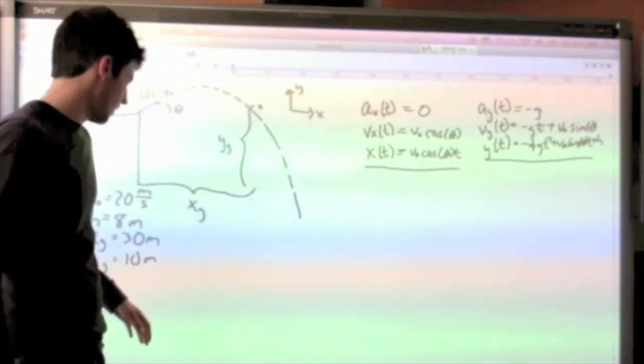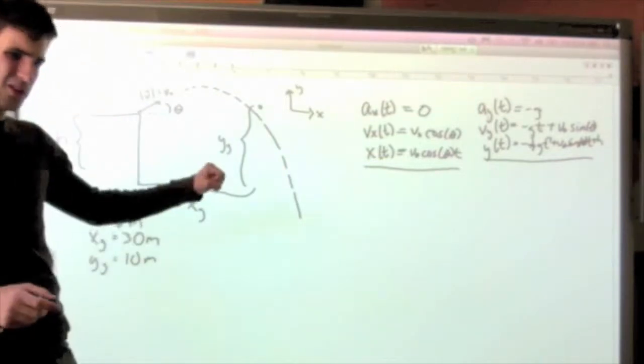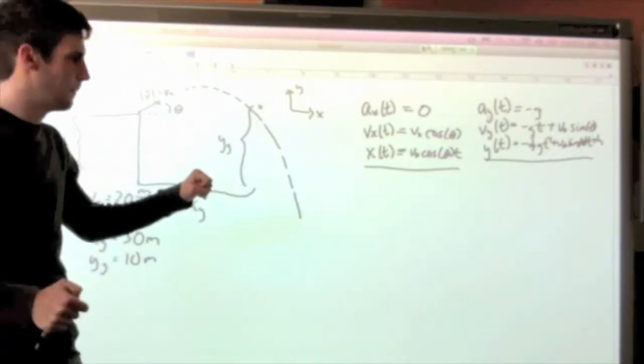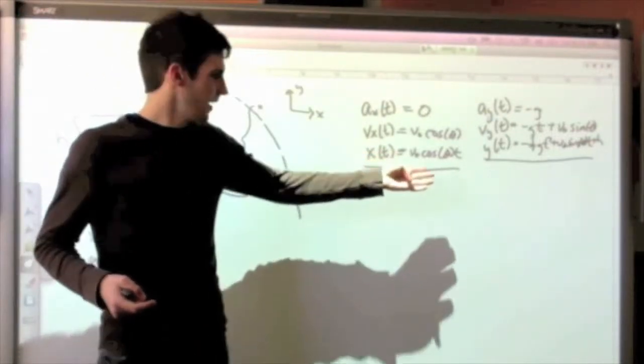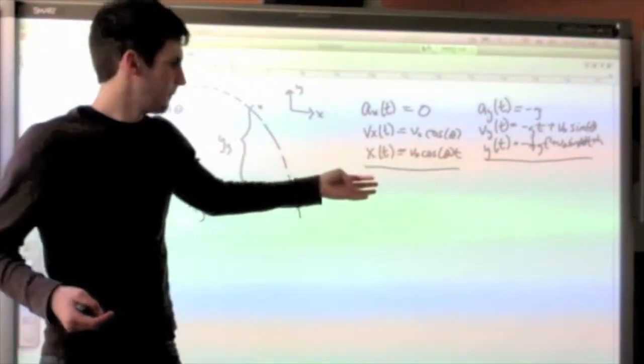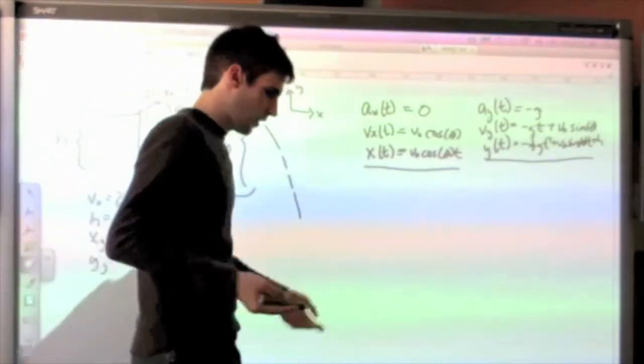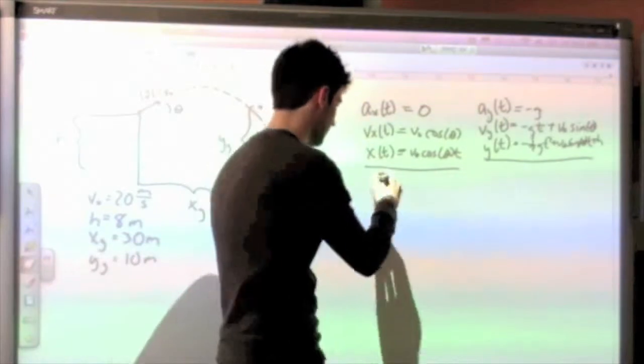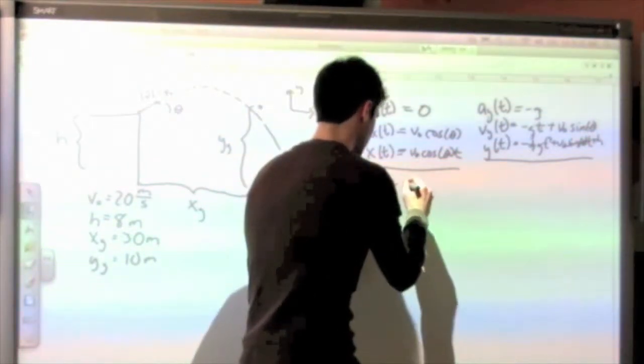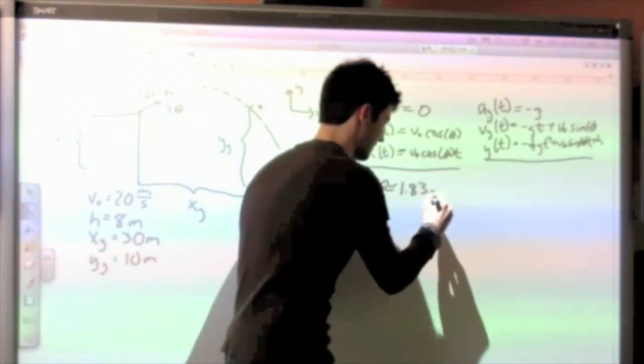And so why don't I do this? Why don't I say, they're both going to reach that point at the same time. So why don't I say, plug in my x value and find out how much time it takes to get there. And if I do that, I do get out a number using these constants right here. And that time is about 1.83 seconds.